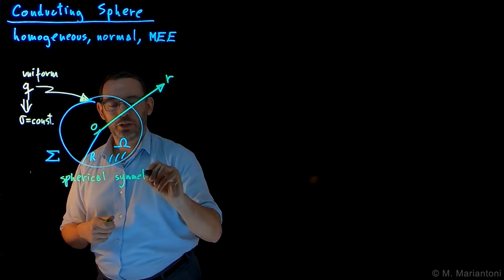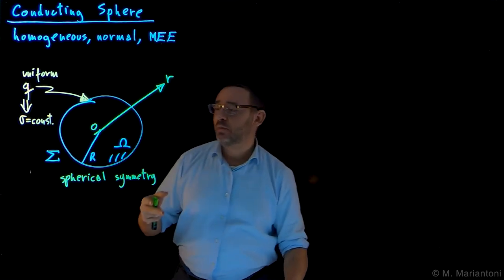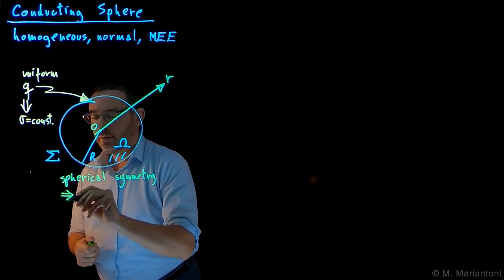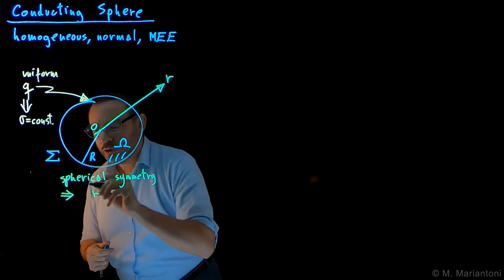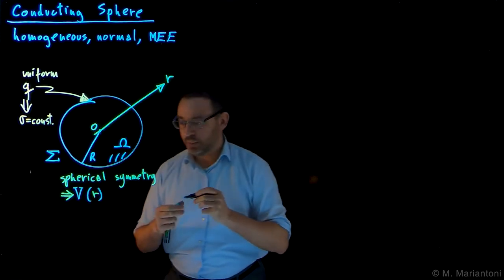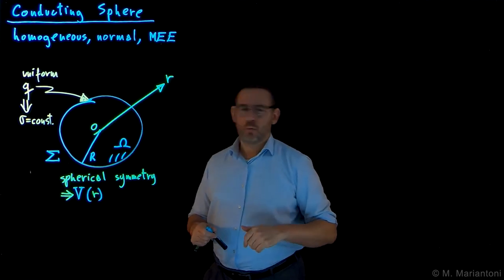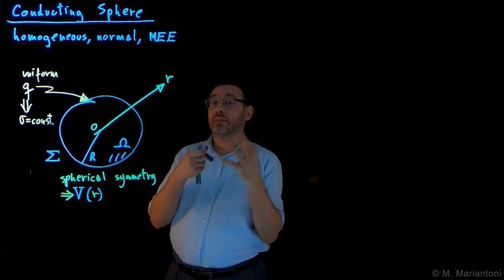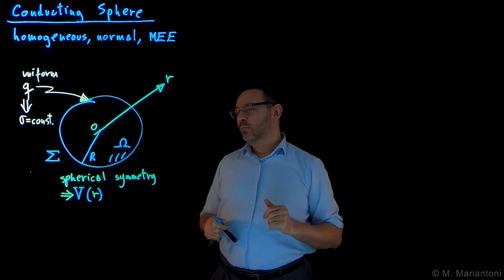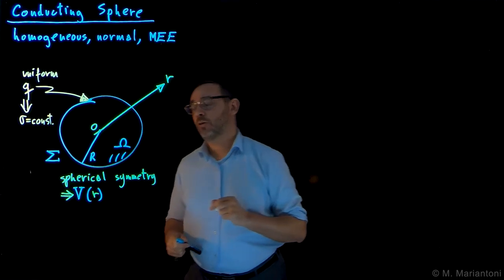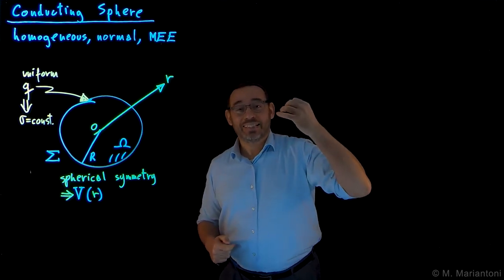We already encountered this kind of symmetry in some of the home assignments. The main consequence of spherical symmetry is that the electrostatic potential associated with this object will be only a function of r. We want to use V — a scalar function — instead of E, which is a vector, and it's only a function of one degree of freedom, r. It's basically the problem of a hard sphere, but it's a conducting sphere in macroscopic electrostatic equilibrium, so it's a little bit different inside. We want to solve this problem by means of an external Dirichlet problem.